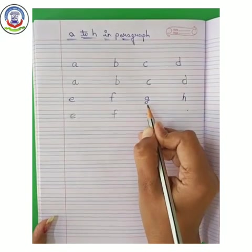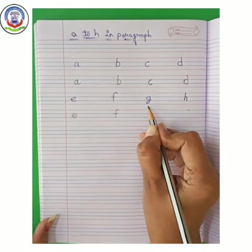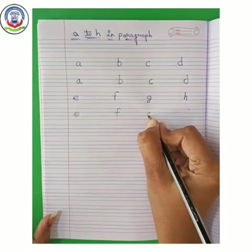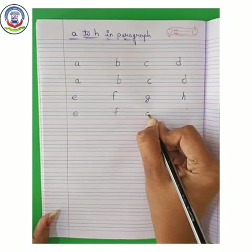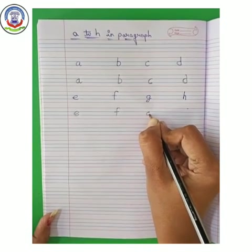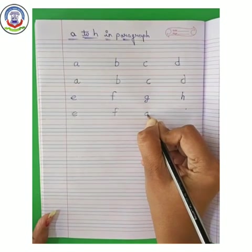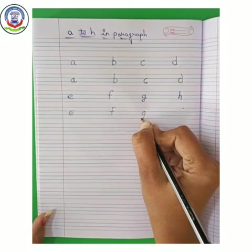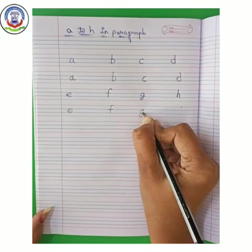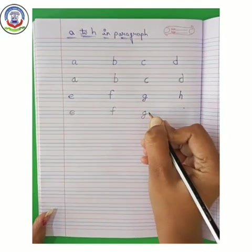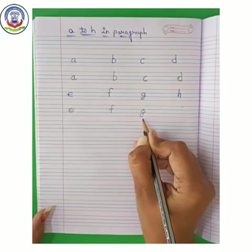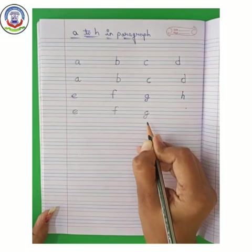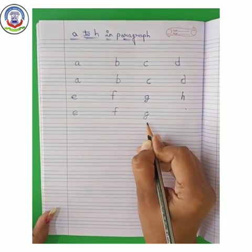Next letter — G. Make a curve in blue line. Now, standing line. Make another curve like this. G. G says guh — Grapes.